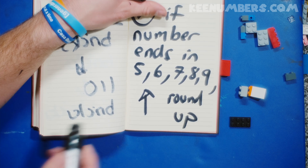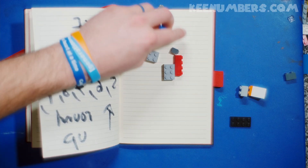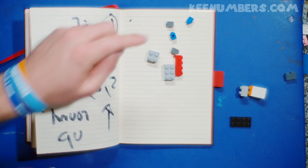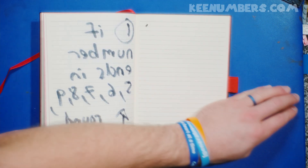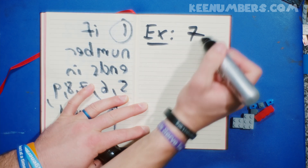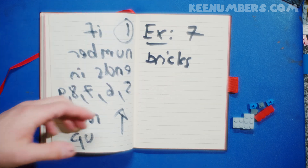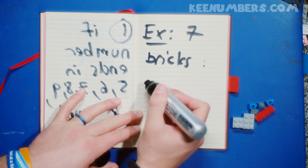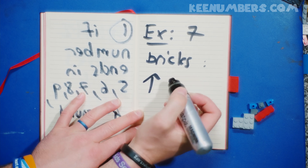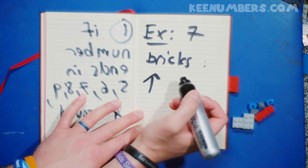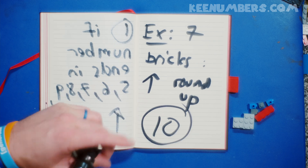What does rounding mean? Here's an example. If you have seven bricks — seven bricks is our first example. The number ends in seven. What was the rule? Five, six, seven, eight, or nine — yeah, it's seven. So we round up. That means after rounding to the nearest ten, because seven is closer to ten than zero, we just round up and say: about ten.